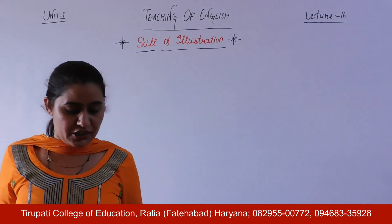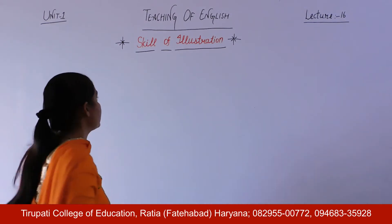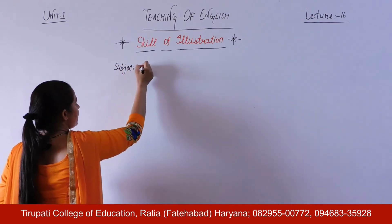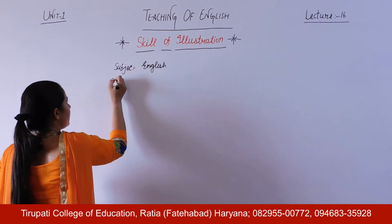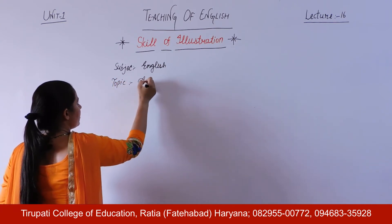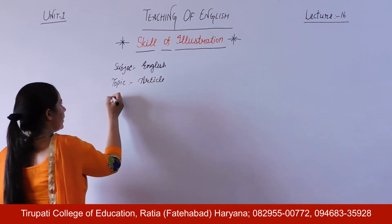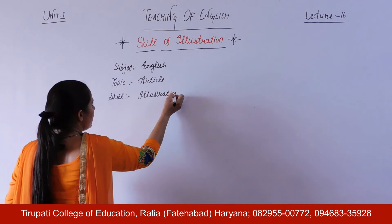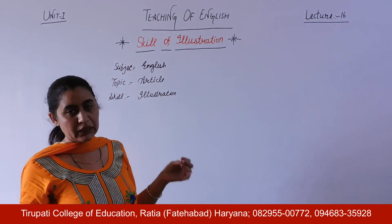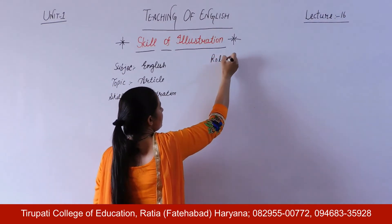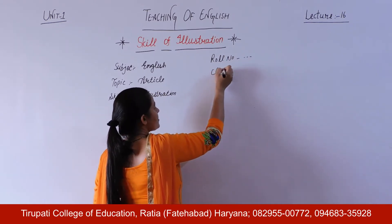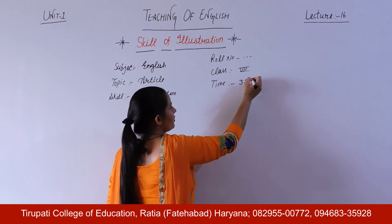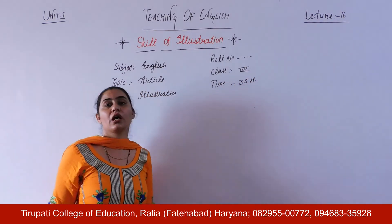The pattern for a micro lesson starts with subject, topic, skill, pupil teacher's name, and roll number. Subject: English. Topic: Article. Skill: Illustration. We mention the class — for example, 7th class — and the time for one lecture is 35 to 40 minutes. Based on that, we prepare the lesson.